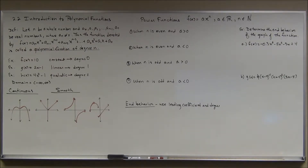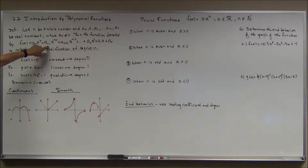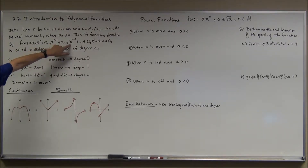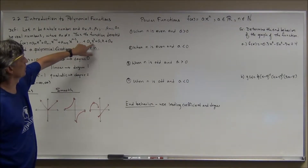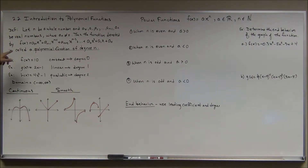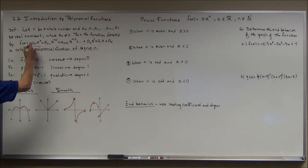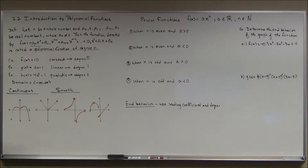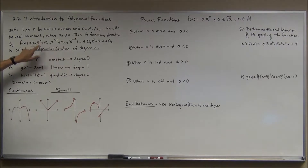We'll also look at symmetry and end behavior. First, the definition: let n be a whole number and let a-sub-0, a-sub-1, a-sub-2, all the way up to a-sub-n be real numbers where a-sub-n is not equal to zero. Then the function f(x) = a-sub-n times x to the n, plus a-sub-(n-1) times x to the (n-1), and so on down to a-sub-2 x squared plus a-sub-1 x plus a-sub-0 is called a polynomial function of degree n. The key is the leading term — a-sub-n is the leading coefficient and n is the degree, the highest power of x.